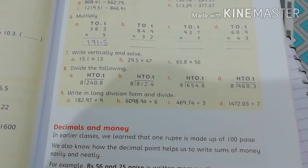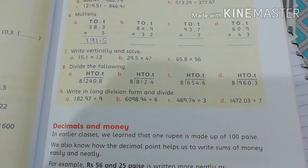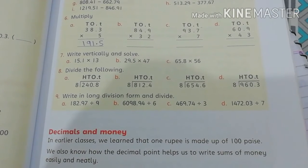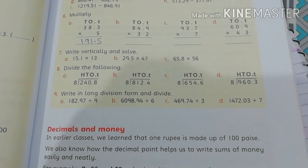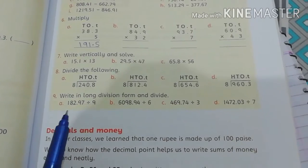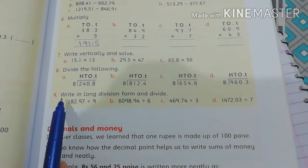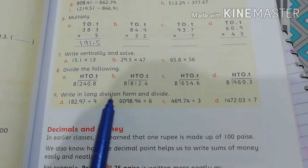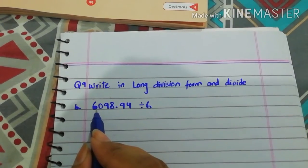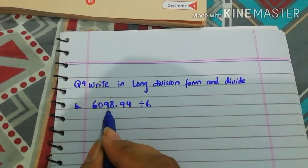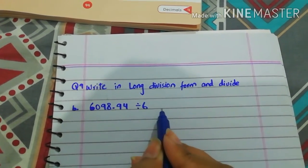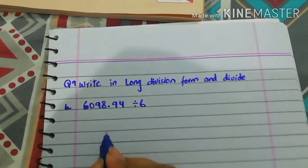Friends, you will do the remaining parts of question number 8 by yourself. Let's move to question number 9: write in long division form and divide. The problem is 6098.94 divided by 6.